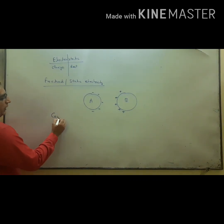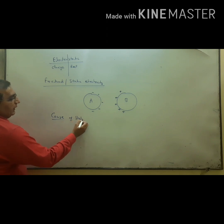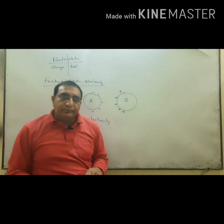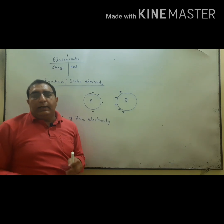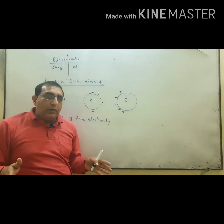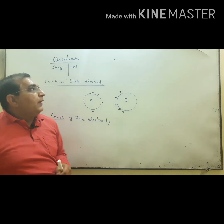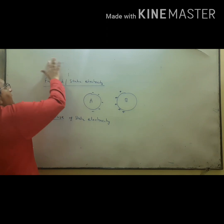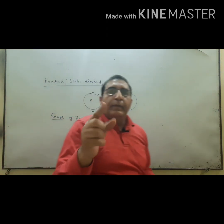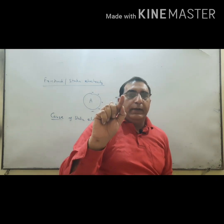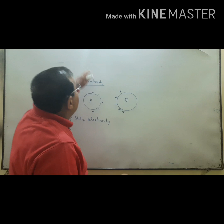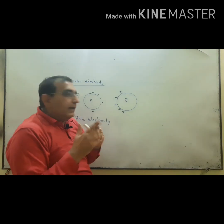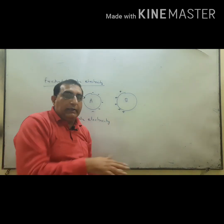Now the next question: what is the cause of static electricity? Suppose you compare A and B — one has electrons tightly bound and the other has electrons loosely bound. For example, if I rub the board with my finger, some ink deposits on my finger. This means the ink which is loosely bound shifts from the board to my finger — it shifts from loosely bound to tightly bound.